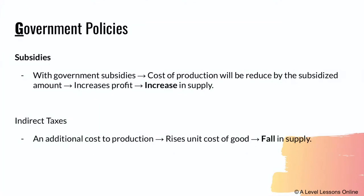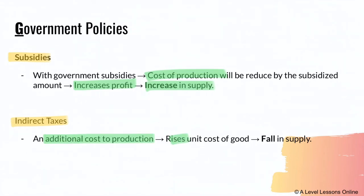The last factor — G — is government policies. The two main government policies are subsidies and indirect taxes. When the government implements subsidies, the cost of production can be reduced, which increases profit and causes an increase in supply, because producers are more willing to supply. On the other hand, indirect taxes — which can be imposed on goods with negative externalities — act as an additional cost of production, causing the unit cost of the good to increase and hence supply may fall. These are government policies that can be implemented to forcefully determine the level of supply.